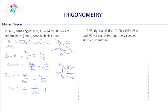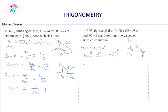In triangle PQR, right-angled at Q, PR + QR = 25 cm and PQ = 5 cm. QR = 25 − PR. Also, QR² = PR² − PQ² = PR² − 25. Equating: (25 − PR)² = PR² − 25, which gives 625 + PR² − 50·PR = PR² − 25.